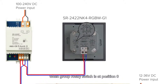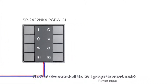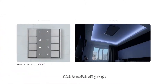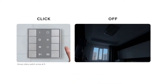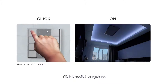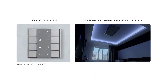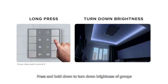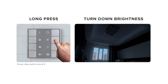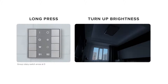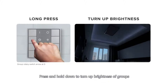When the Group Rotary Switch is at position 0, the controller controls all Dolly Groups. Click to switch off groups. Click to switch on groups. Press and hold down to turn down brightness of groups. Press and hold down to turn up brightness of groups.